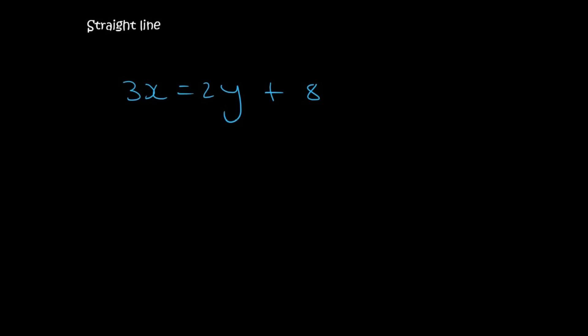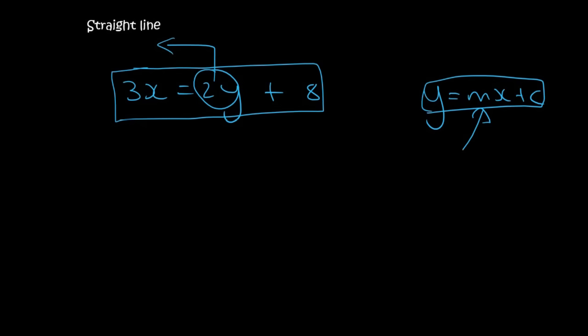This one over here is also a straight line, but it looks a bit weird. Because we know that a straight line is meant to look like this. But guess what? We are good at maths, and we can rearrange this equation so that it will look like that. So what we do is we get the y to the left-hand side, and we get everything else to the right. So we're going to end up with minus 2y equals to, this 3x is going to become minus, plus 8.